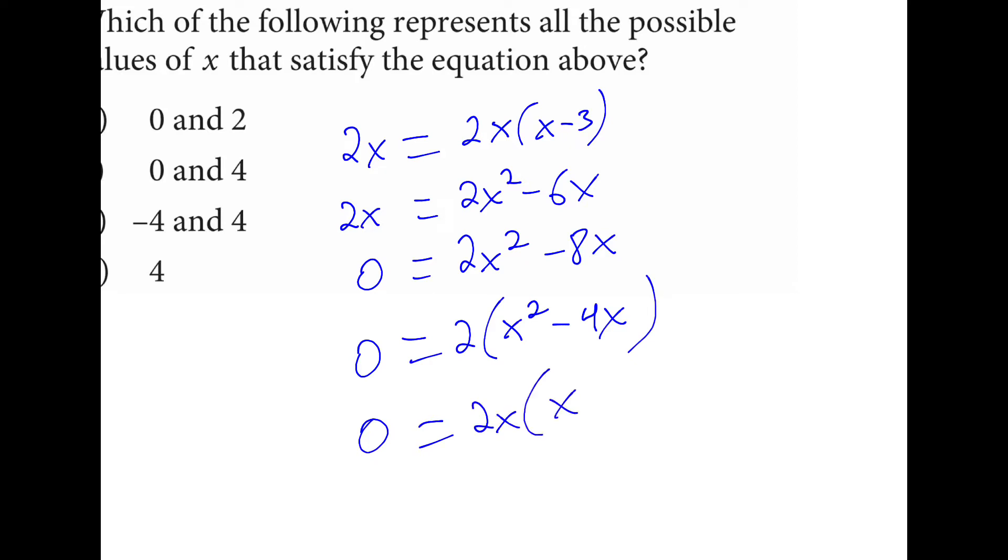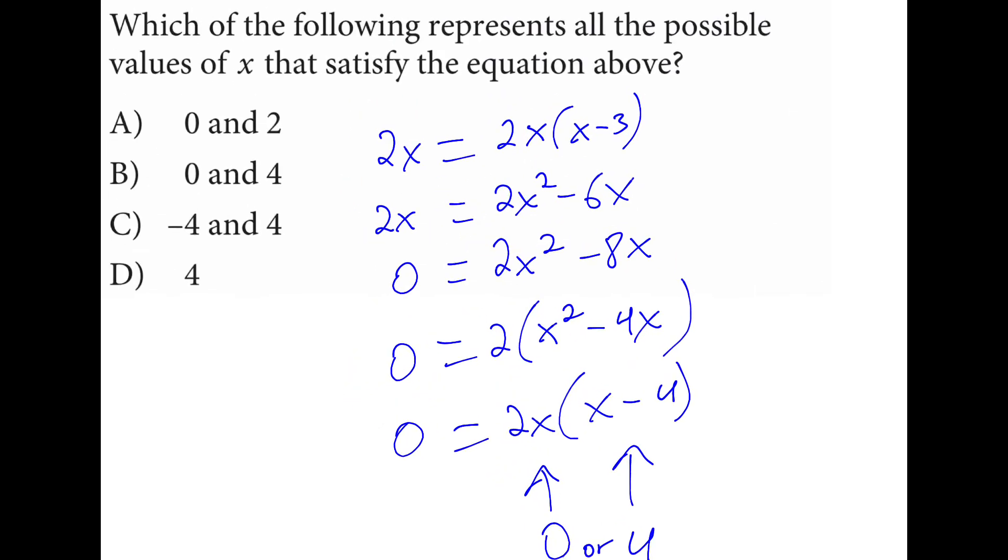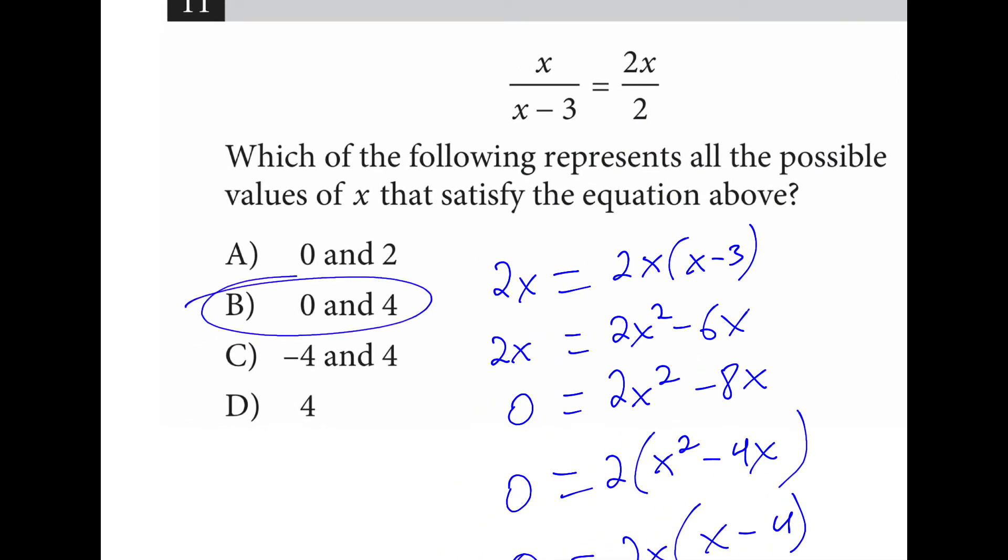And in fact, I could factor out an x as well. So 2x times x minus 4. One solution is 0, the other solution is 4. I can go back and test both of those answers, and they both check out. So I'm going to pick B.